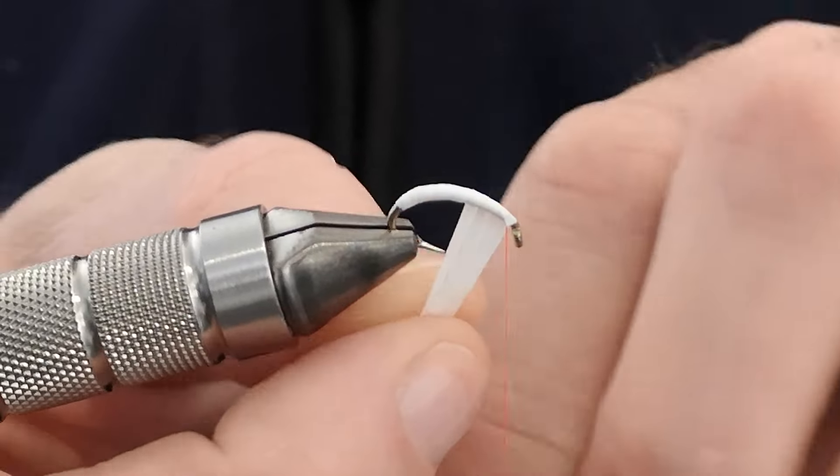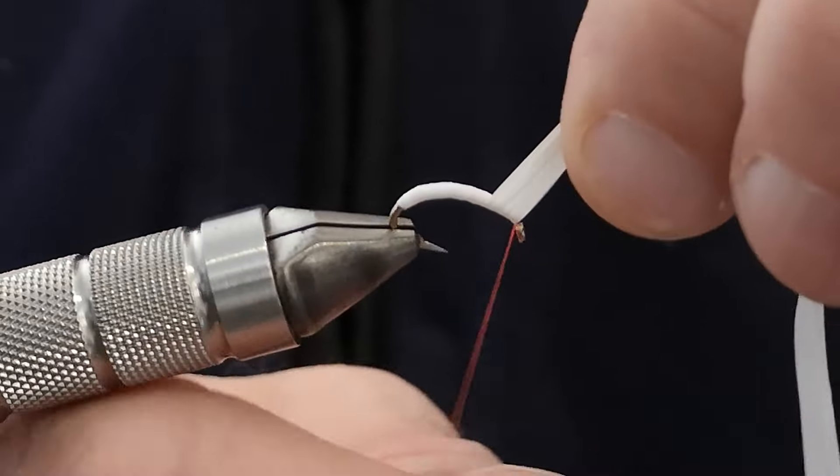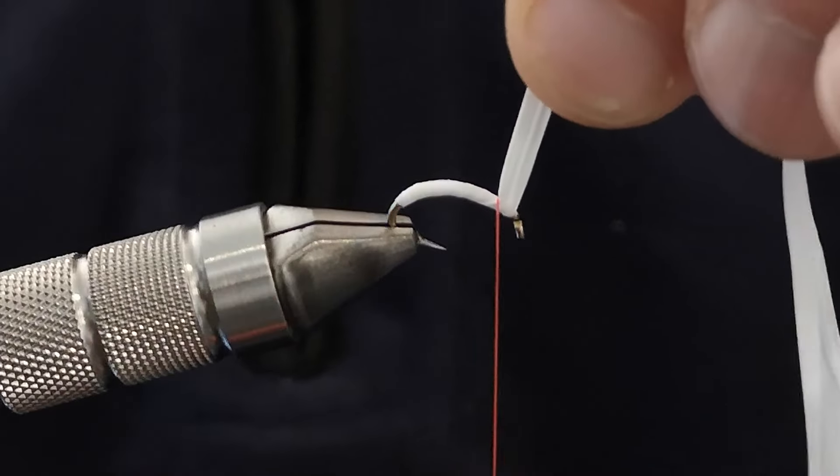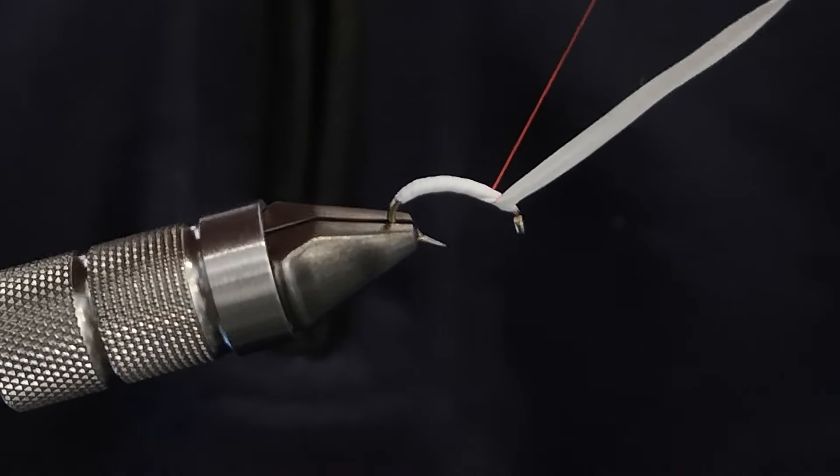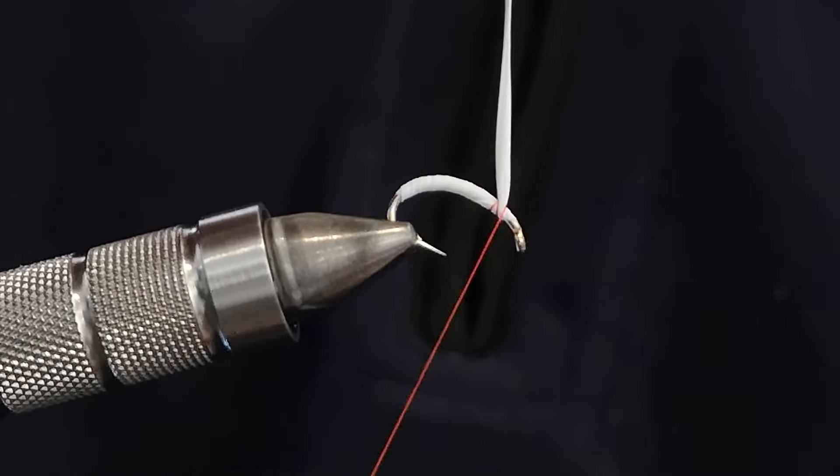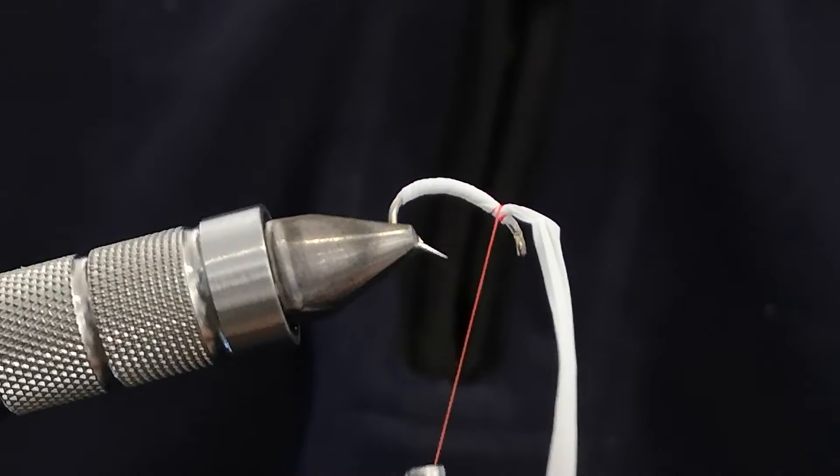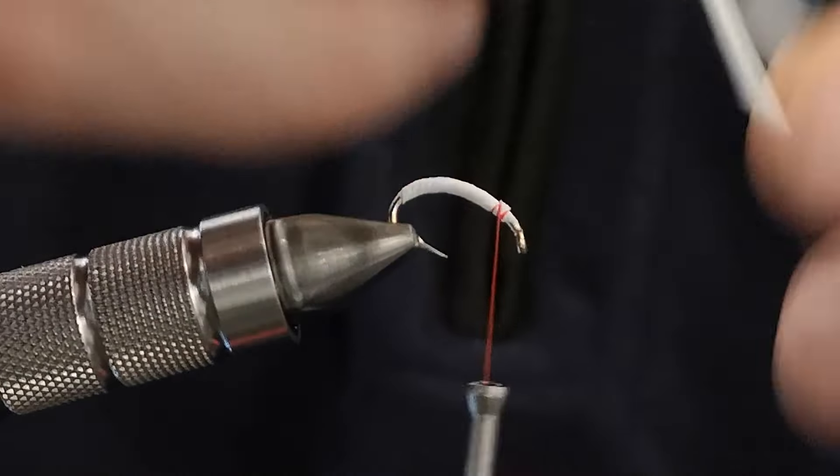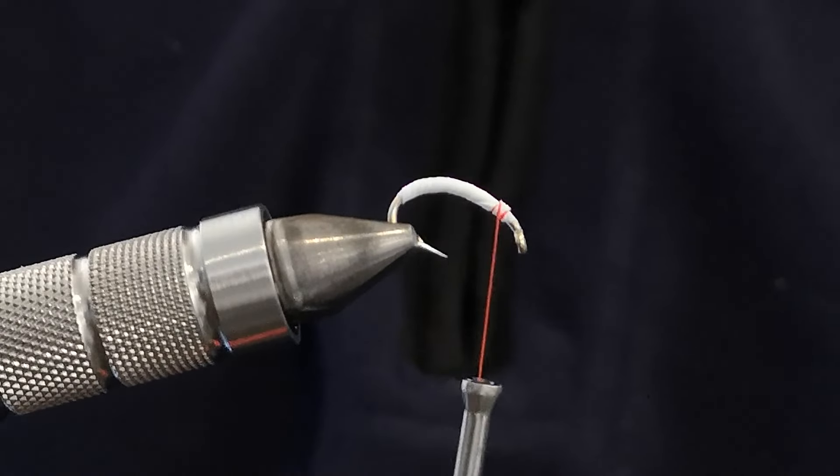We're just going to do one more wrap there and then we're going to tie it off. Straighten that up so you can see. So a couple of turns in front, a couple of turns behind, one more turn in front. Snip off the excess. The beauty of plumber's tape is it's so cheap.